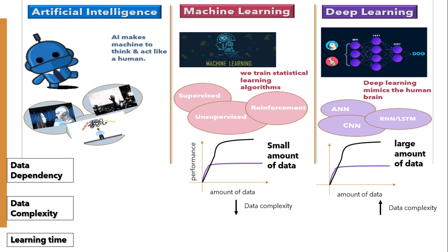If I talk about learning time, the advantage goes to the machine learning side. Because of the huge datasets required and the many parameters and complicated mathematical formulas involved, a deep learning system can take anywhere from a few hours to a few weeks to train, whereas machine learning can take as little as a few seconds to a few hours. However, for testing the model, machine learning algorithms take more time compared to deep learning.